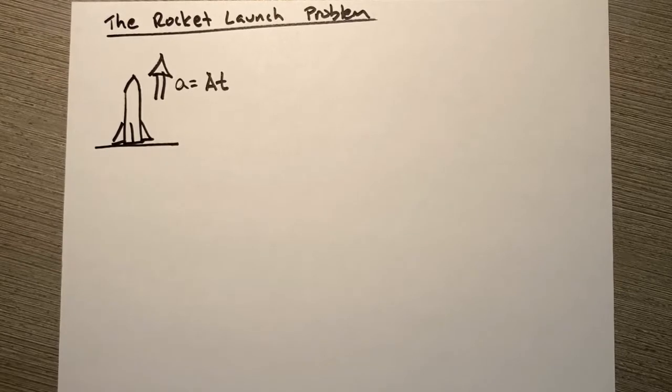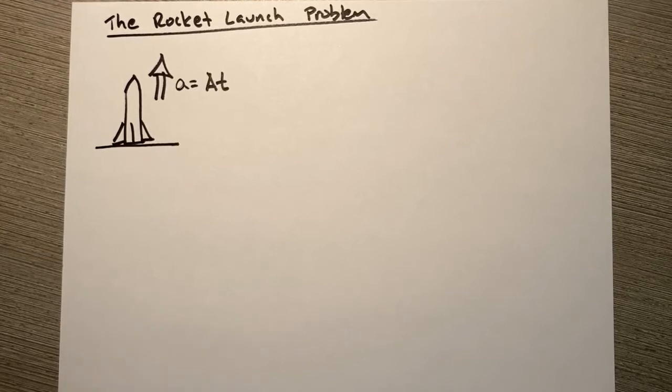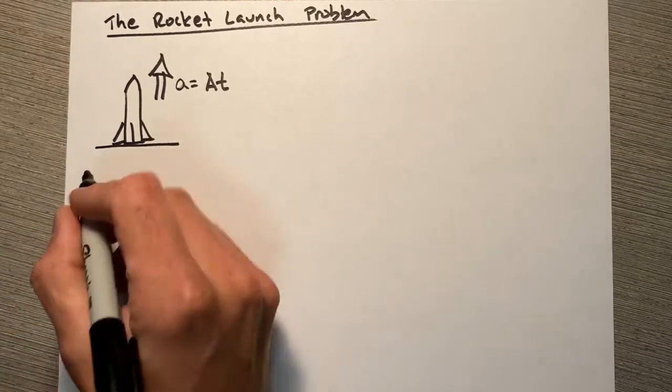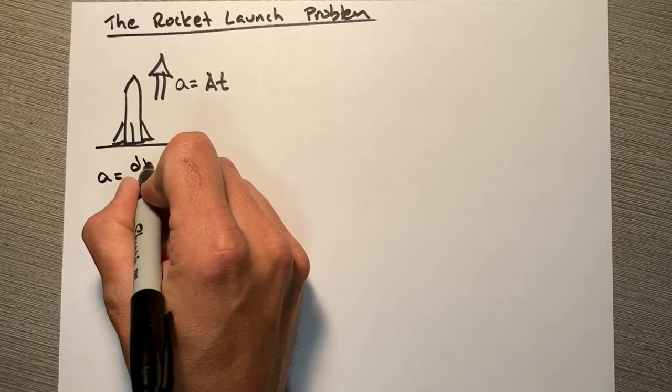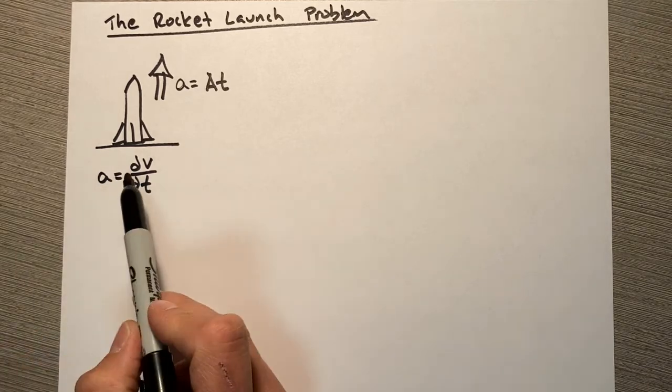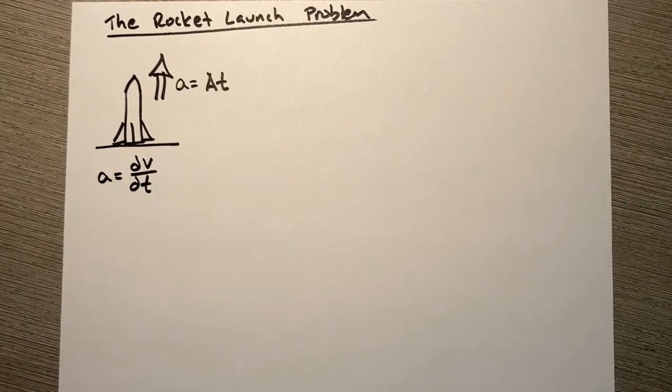So we're going to come up with expressions for both of those. The first thing we're going to do is look at the definition of acceleration. Remember, acceleration is dv over dt. That is to say, if we integrate this function, we're going to get velocity.